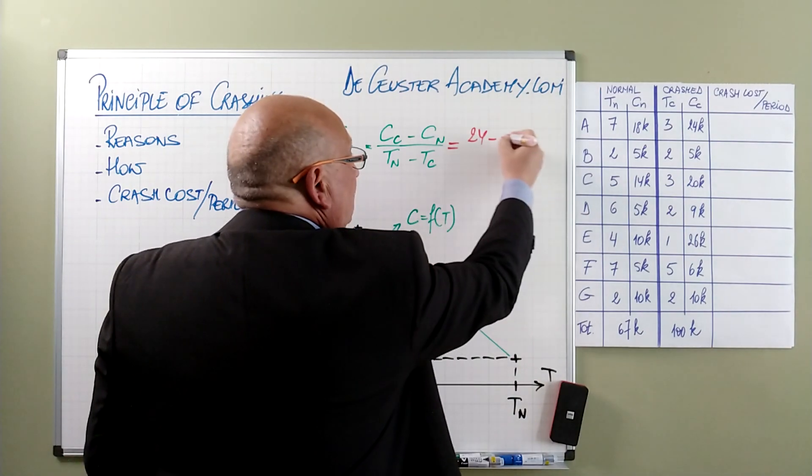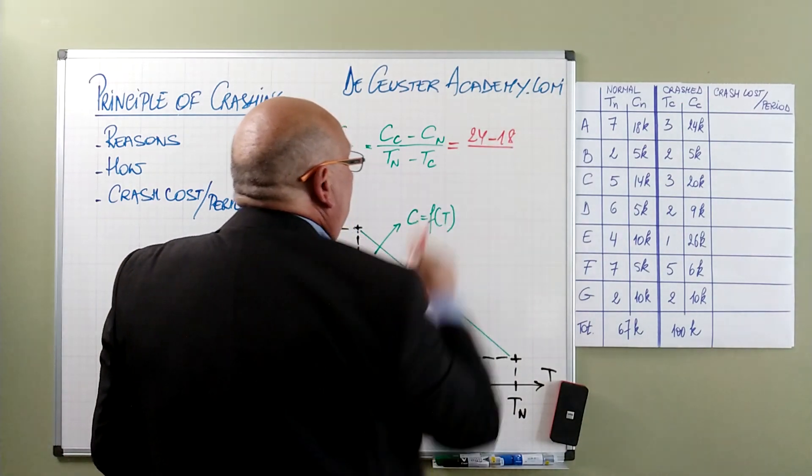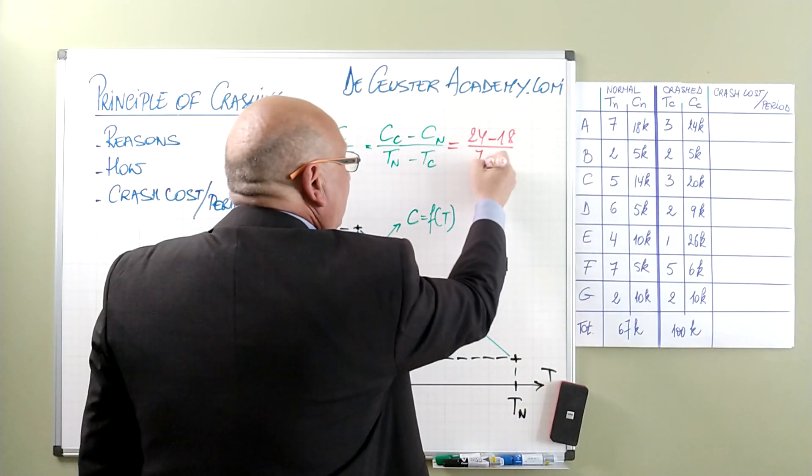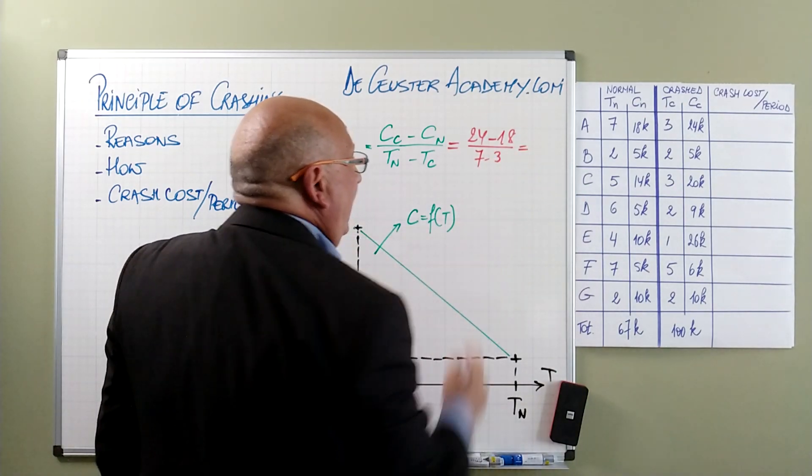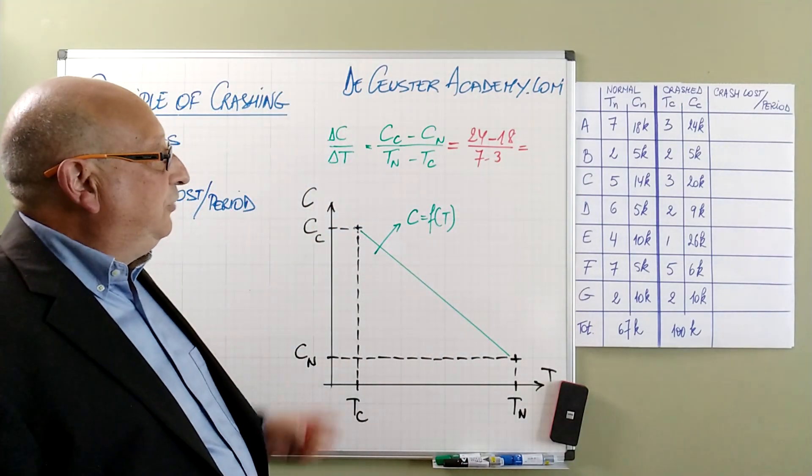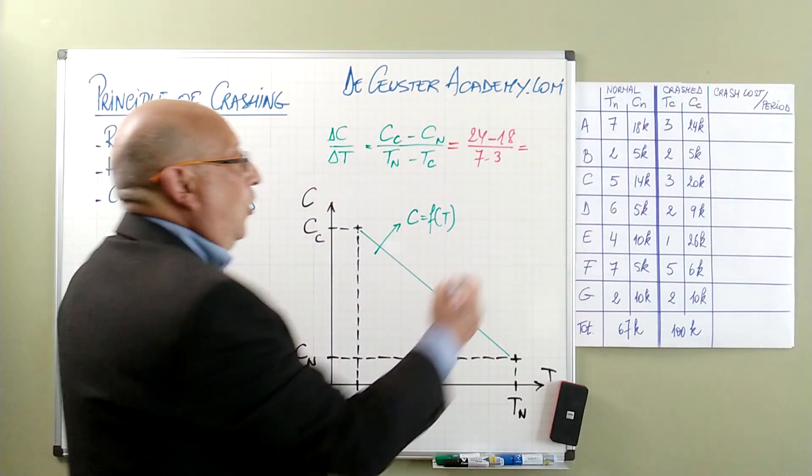A is the first activity and we know that the crash cost for A is 24, the normal cost is 18, and the normal time is 7, crash time is 3. So we find here a difference of 6 over 4.